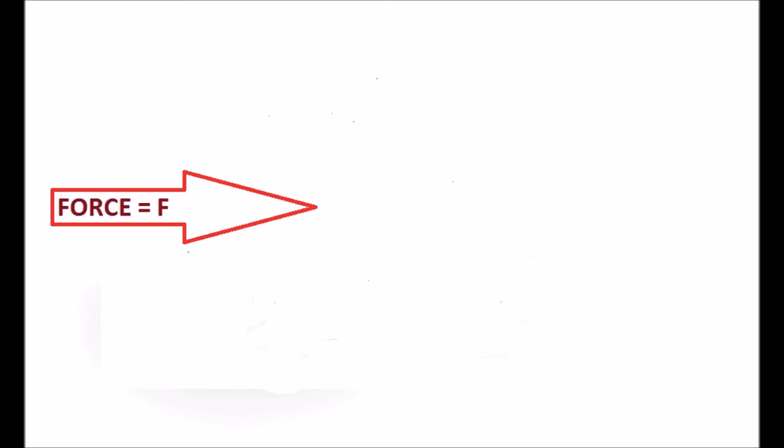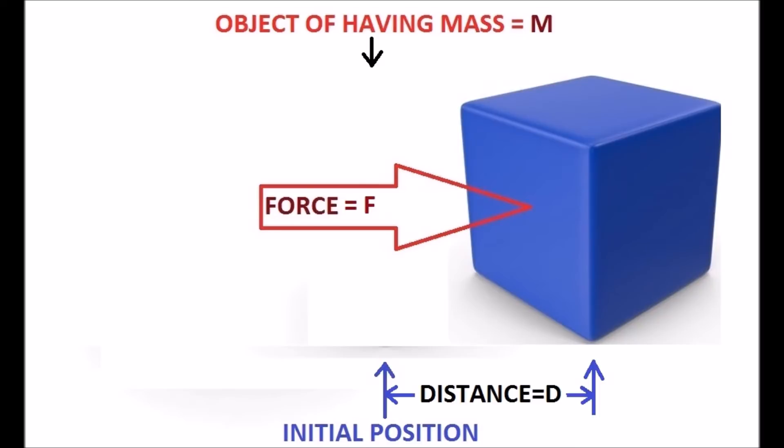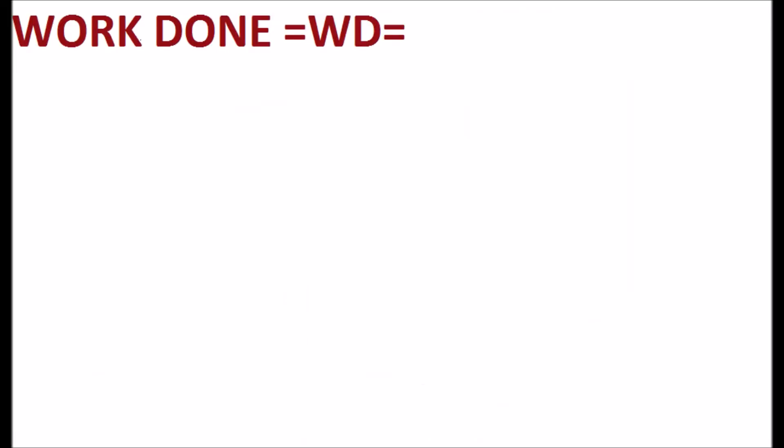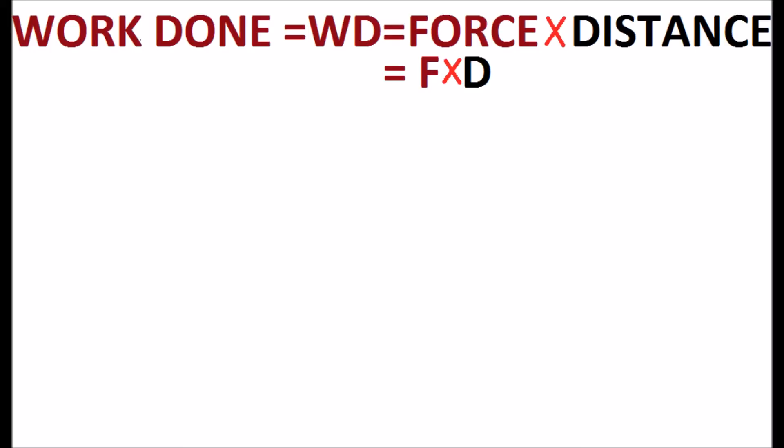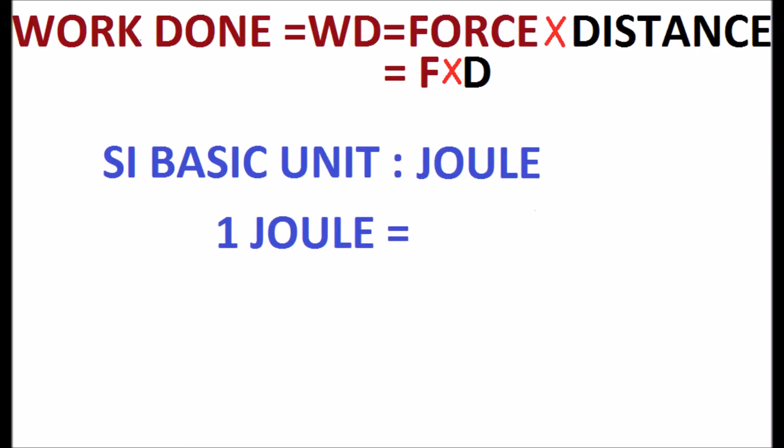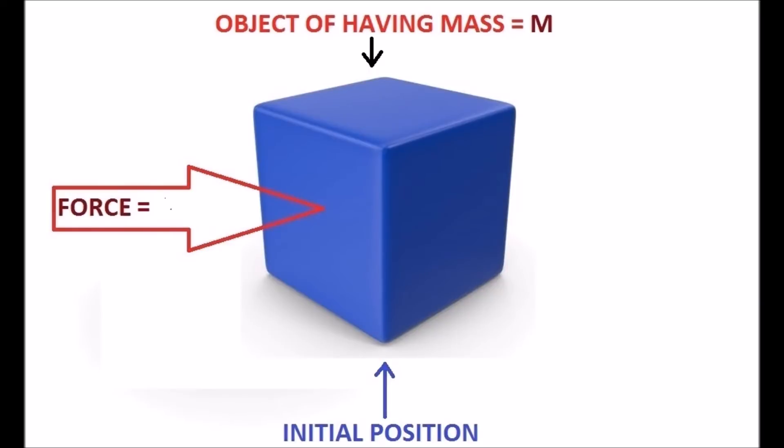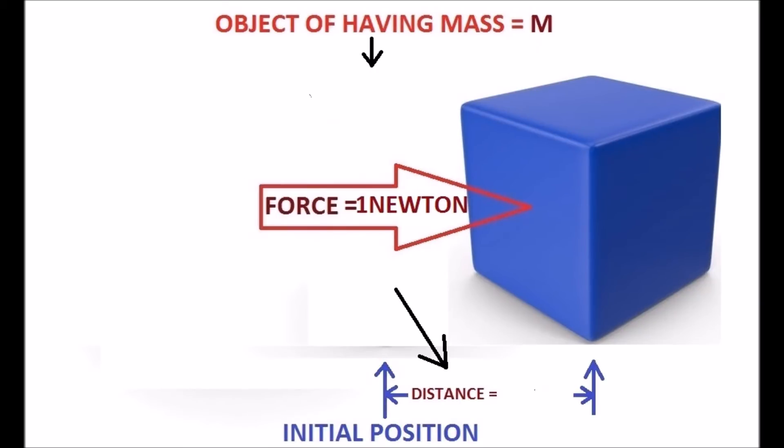Work done means using a force to move an object a distance, provided the force and motion are in the same direction. Work done is the product of force and distance. The SI unit is the joule. One joule equals kilogram meter squared per second squared, defined as the work done when a force of one newton is exerted through a distance of one meter.